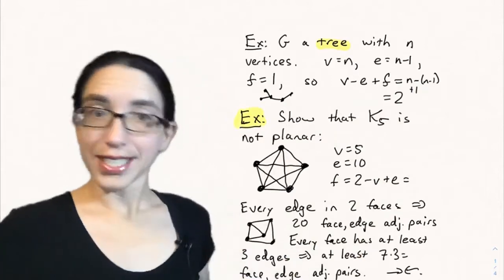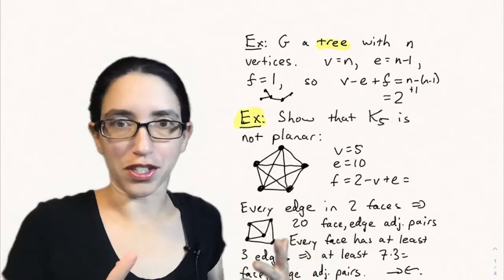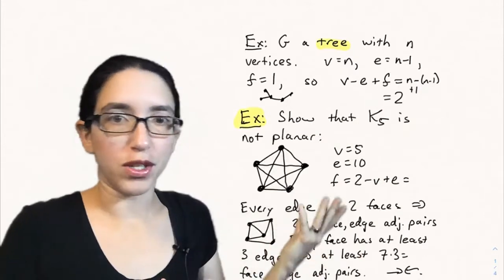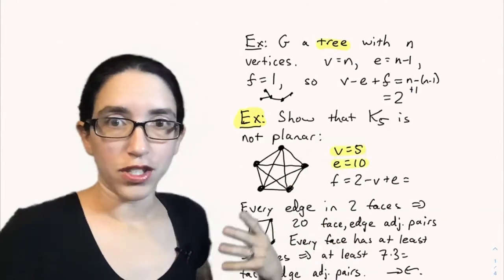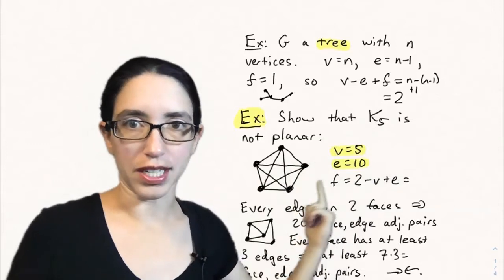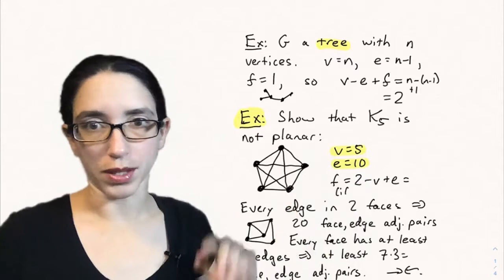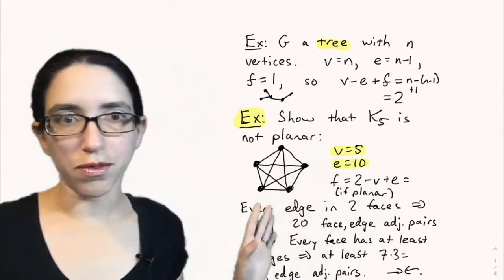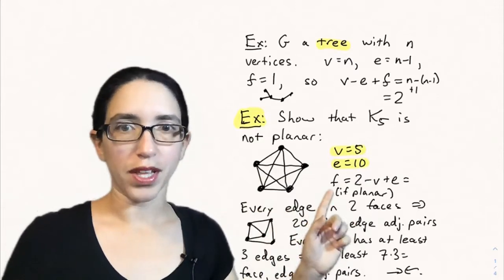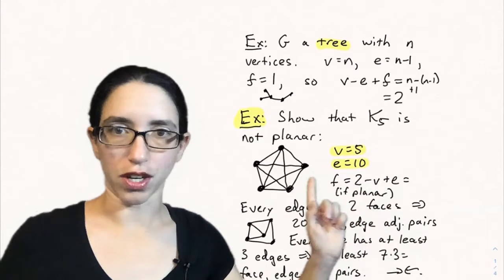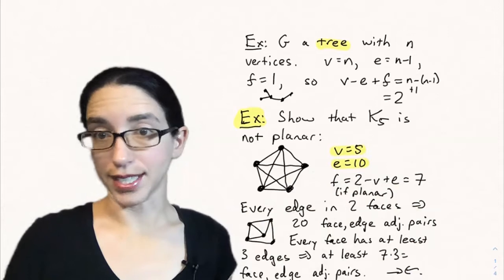If a graph can't be embedded in a way that has Euler characteristic two, then it's not planar. We can use this to show that K5 is not planar by proof by contradiction. K5 is the complete graph on five vertices; it has five vertices and ten edges, because that's five choose two possible edges. If we assume for the contrary that it's planar, then by Euler's formula the number of faces is two minus V plus E. Plugging in ten and five, we get that F is seven.